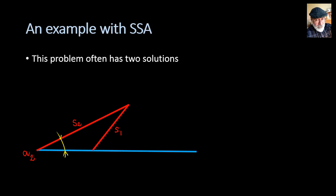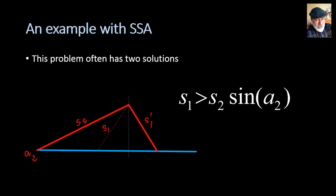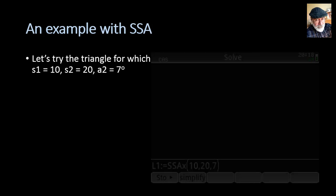An example with SSA. This problem often has two solutions. Check it out. You know S1, S2, and angle 2. But the solution to that exercise could also be this one. So, as long as S1 is longer than S2 sine of A2, you're going to have two solutions. The only case in which we have only one solution is when S1 is exactly S2 multiplied by the sine of A2. What happens when S1 is less than S2 multiplied by the sine of A2? Well, that is an impossible problem. The calculator will give in that case a complex number as a solution, and that is an indicator that there is no real solution to the triangle.